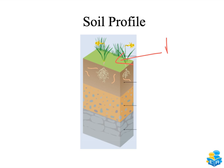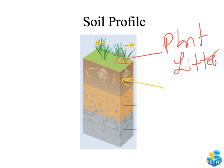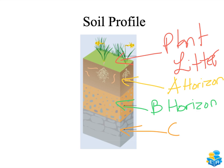Right at the top you have the plant litter. The next layer is called the A horizon, followed by the B horizon, and the very bottom layer is called the C horizon.